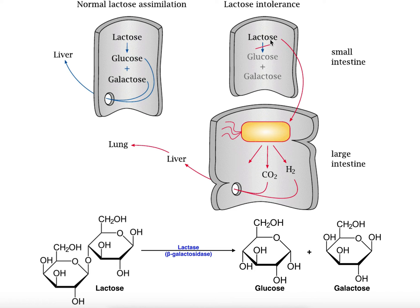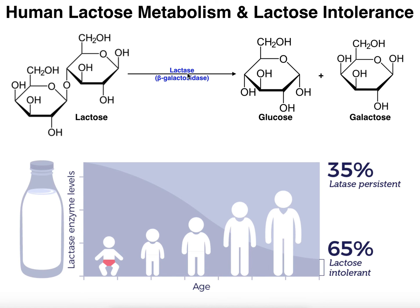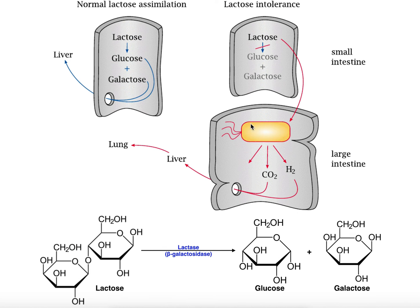Because the lactose is not metabolized by lactase into glucose and galactose, it has two fates. One: the lactose can be picked up by intestinal bacteria. Some bacteria possess a beta-galactosidase enzyme similar to lactase and can hydrolyze lactose into glucose and galactose, but they don't stop there — they metabolize it further into carbon dioxide, hydrogen gas, and in some cases methane. Some of those gases are absorbed and eventually reach the lungs, but some remain in the intestine, and that is one source of flatulence.